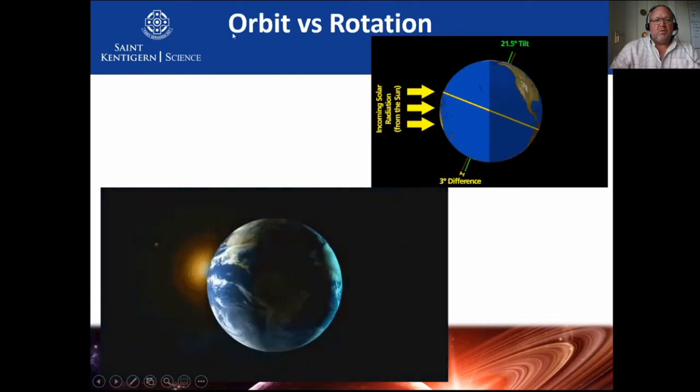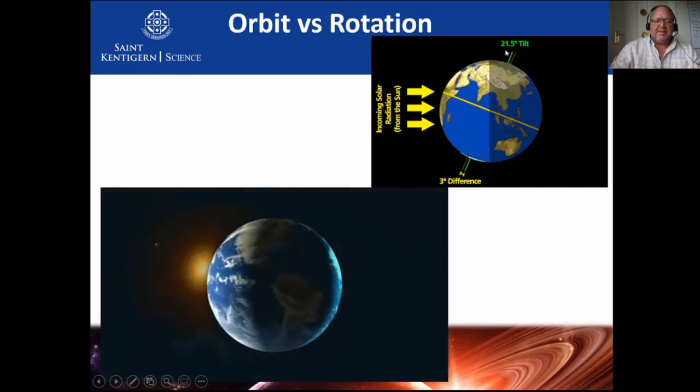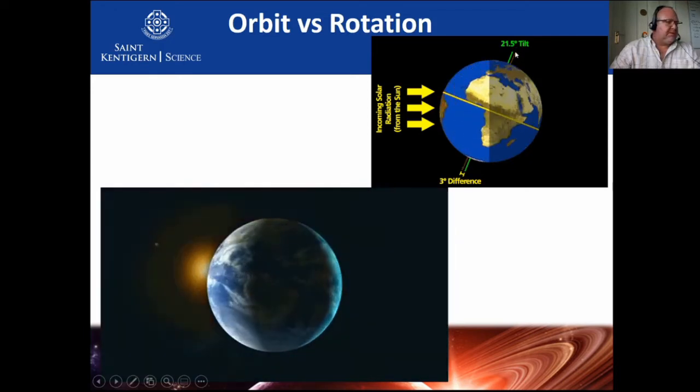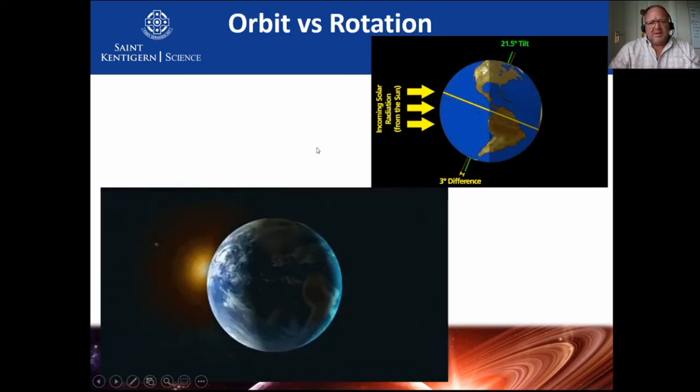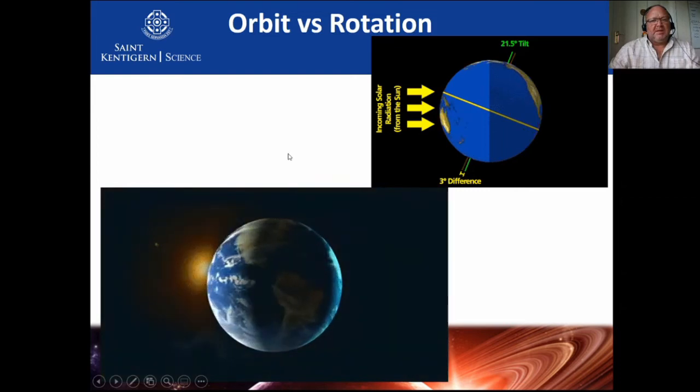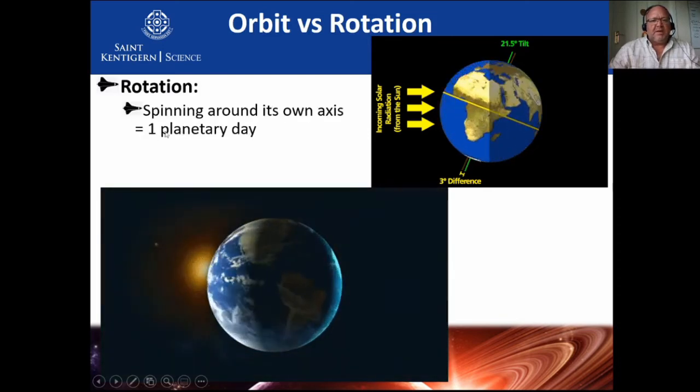So what's the difference between orbits and rotation? A rotation is the Earth spinning around its own axis. It's interesting to note that the Earth is tilted at about 23 and a half degrees. The point is it is tilted, and this actually brings us our seasons. As it's spinning on its own axis, it is one planetary day.